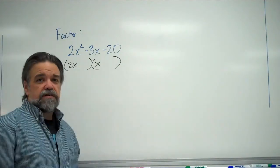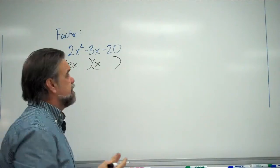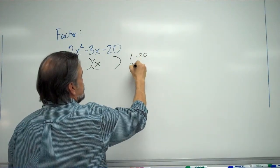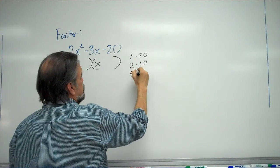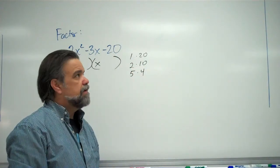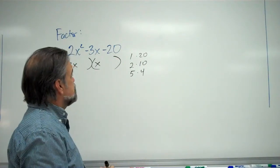Now, what ways to get negative 20? Well, I know one's positive, one's negative. And then, aside from that, I can have 1 times 20. I can have 2 times 10. Or, I can have 5 times 4. And, that's it. Those are my only choices. So, now I need to think about one of those pairs is going to go in here in some way.